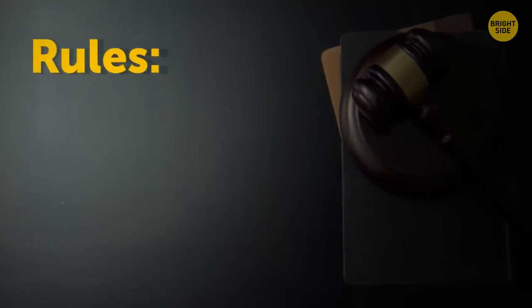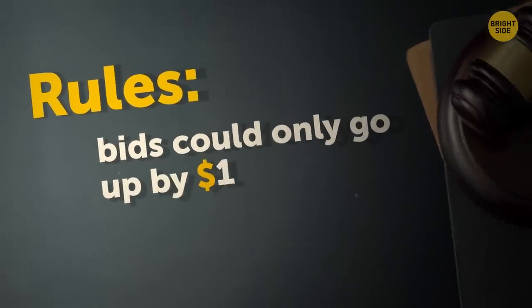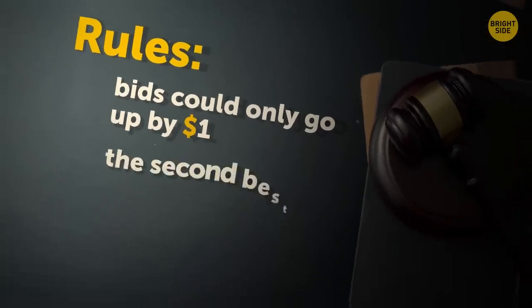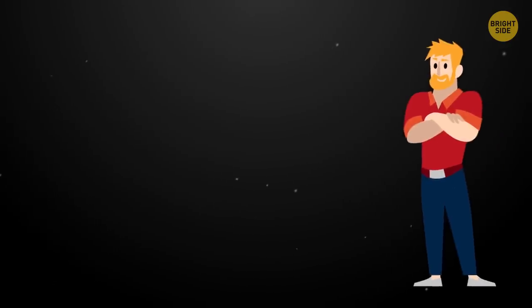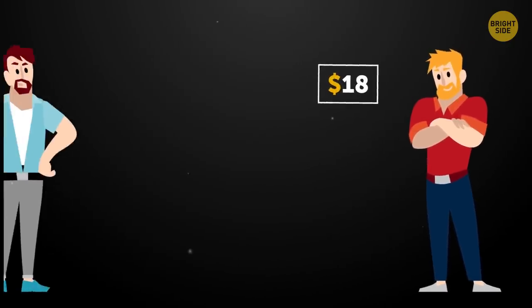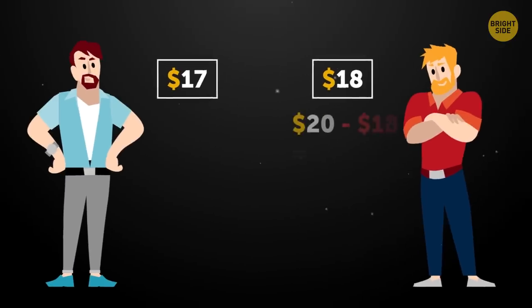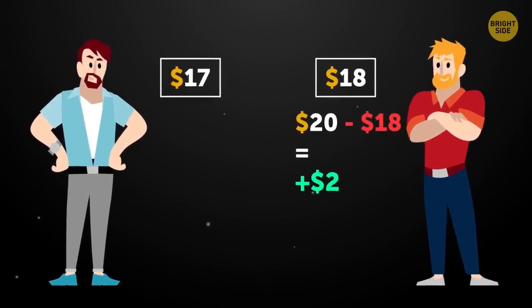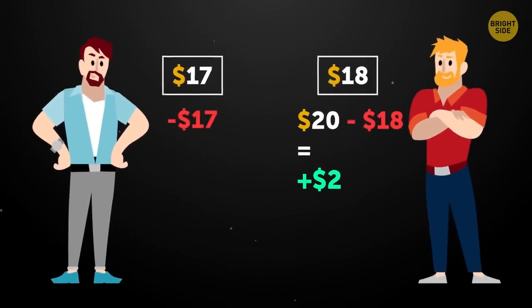The only rules of the auction were that bids could only go up by $1, no less, no more, and that the second-best bidder would pay the whole sum of their bid to the professor. So, let's say the best bid was $18. Then the second-best would be $17. The one who paid $18 would receive the auction bill and win $2. While the one who bids $17 would just pay the money and receive nothing.